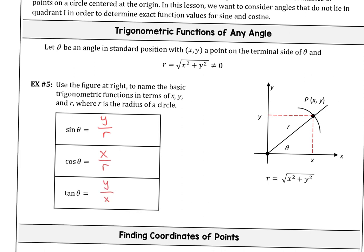If you rearrange things and want to find x and y by themselves, it turns out that y equals r times sine of theta — just by multiplying both sides by r. That means x equals r times cosine of theta, again multiplying both sides by r. And tangent is just the slope of that terminal line of that angle. So if we're trying to figure out some coordinates here, let's look at example 6.